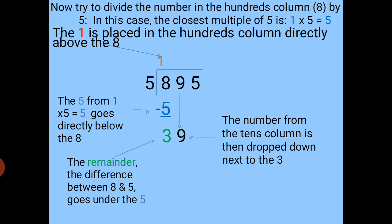Now try to divide the number in the hundreds column, that is 8, by 5. The closest multiple of 5 is 1 × 5 = 5. The 1 is placed in the hundreds column directly above the 8. Now 8 minus 5 is 3. The 5 from 1 × 5 goes directly below the 8, and the remainder 3 goes under the 5.